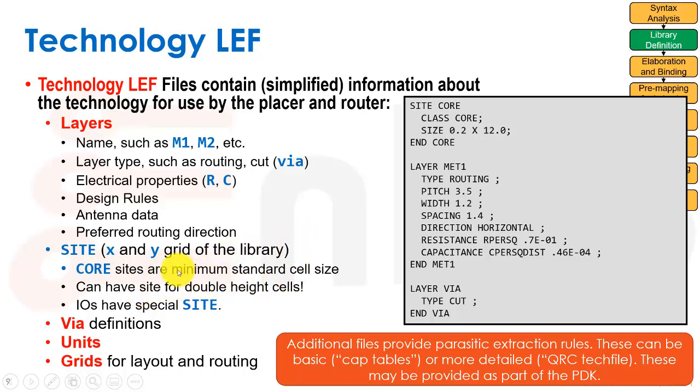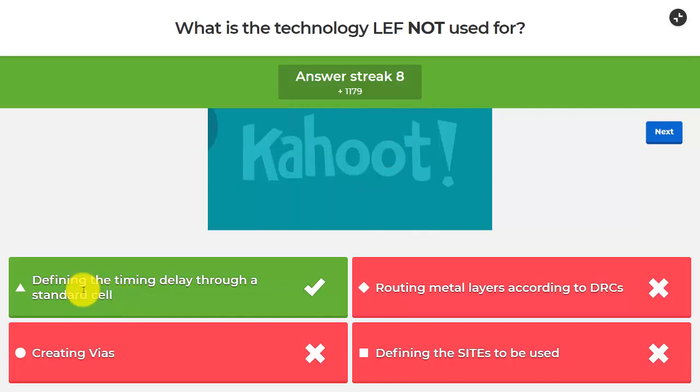Some things like IOs will have a special site, which is different. So we have lots of via definitions, we have some unit definitions, some grids like where the tracks are and so forth for layout and routing. So that's the tech LEF file. It does not have the timing delays through a standard cell. That's what lib files have. It does have the routing layers according to DRCs. It has via creation rules and it has the sites to be used.